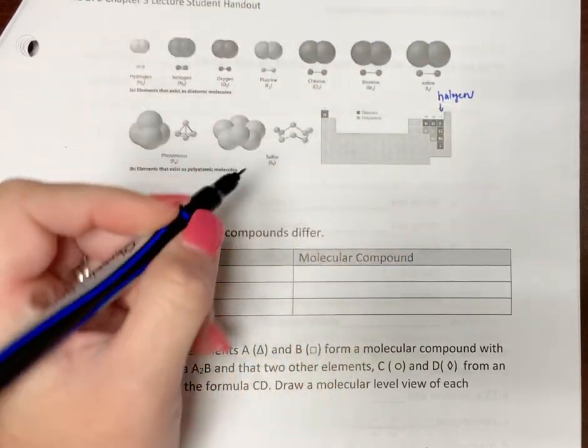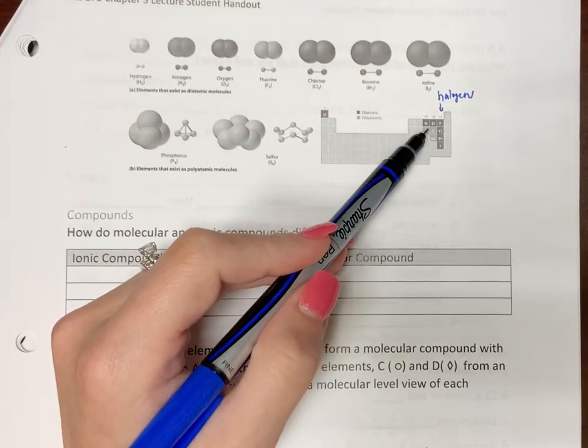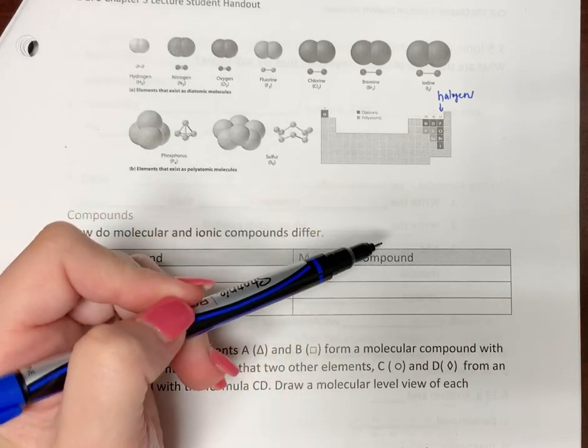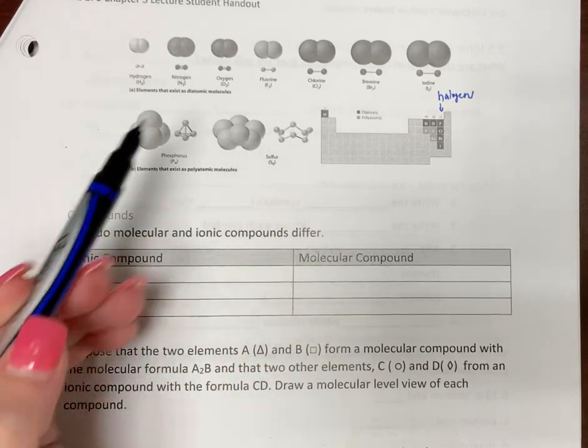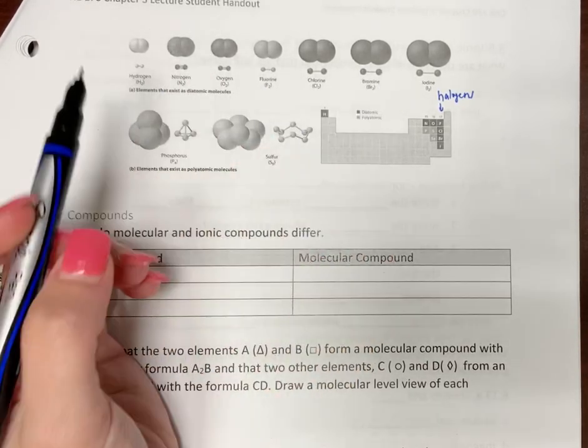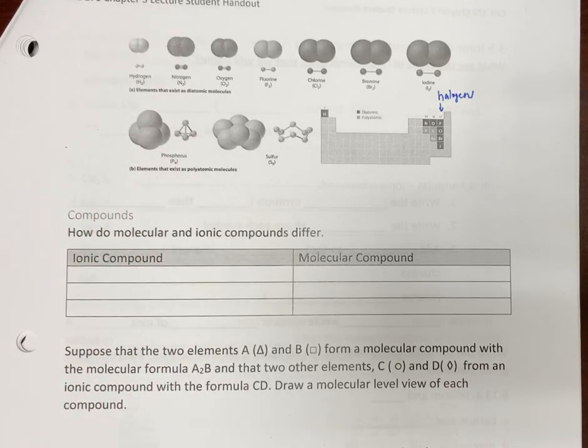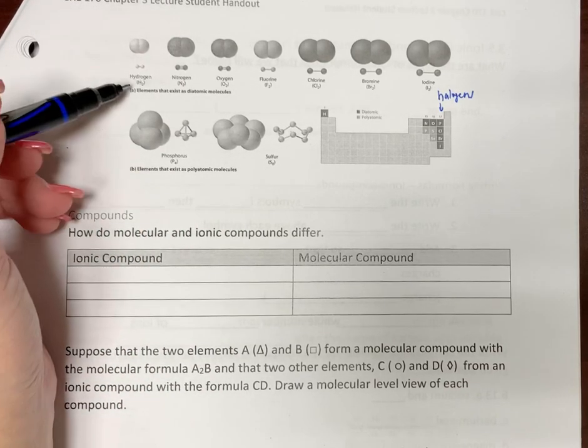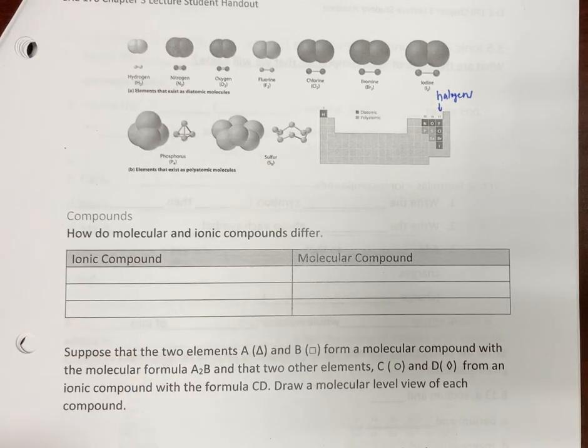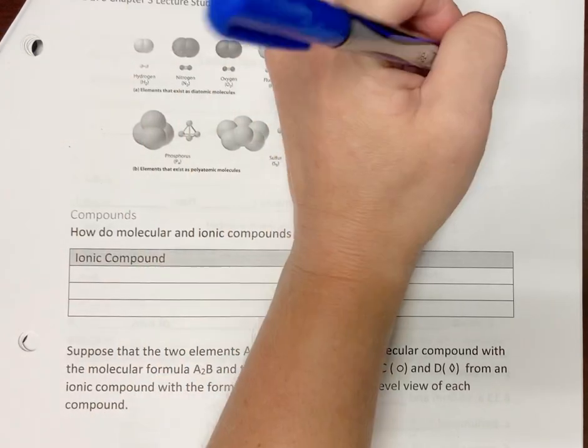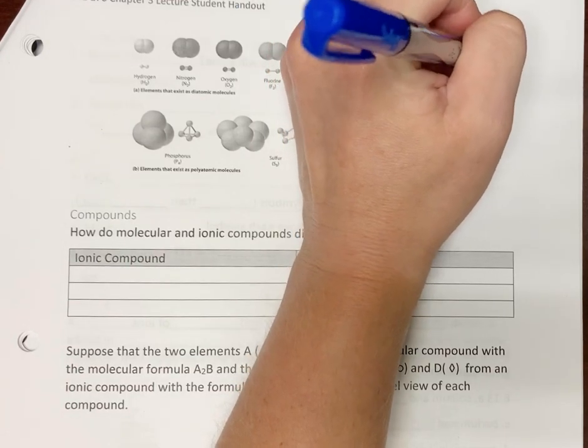So your halogens, and then you have oxygen, nitrogen, and hydrogen there. And these are all called diatomic. Don't get in the weeds about this. Don't worry about memorizing them. But two atoms of the same element make one molecule. We call those diatomic.